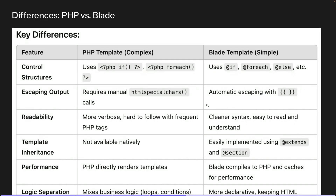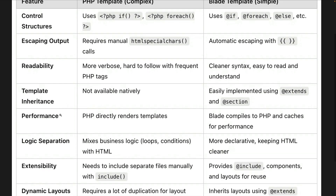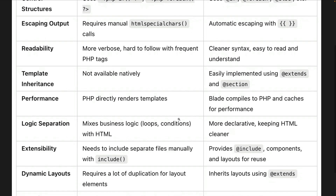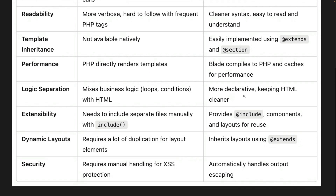Now, some key differences include control structure, escaping, and readability. Blade also has template inheritance, meaning you can use @extends and @section to include templates. Performance is also worth noting: PHP directly renders the template, whereas Blade compiles the PHP and caches it for performance.